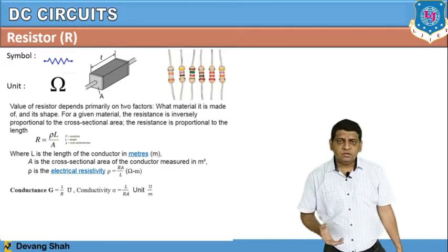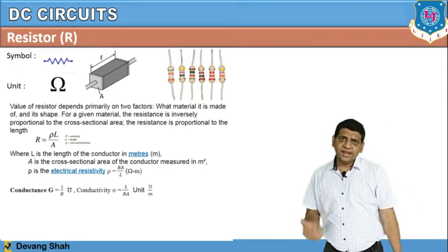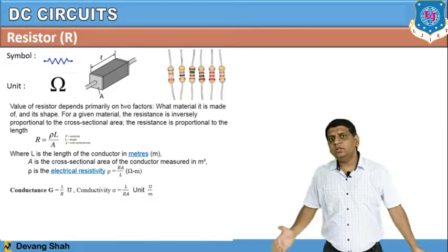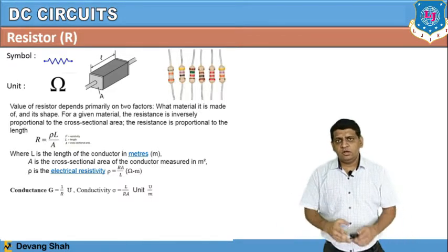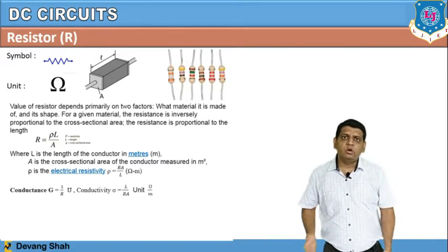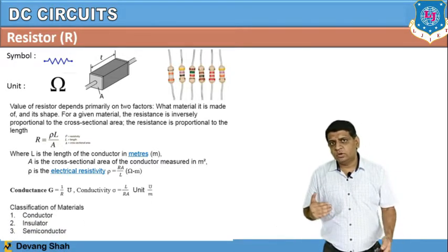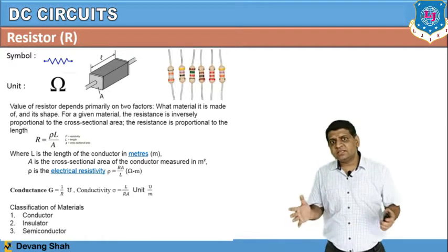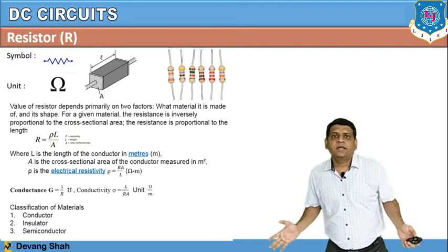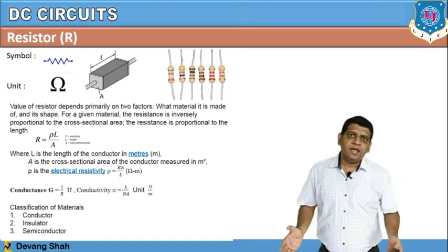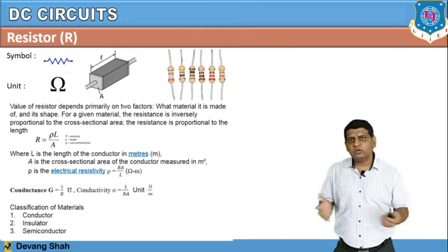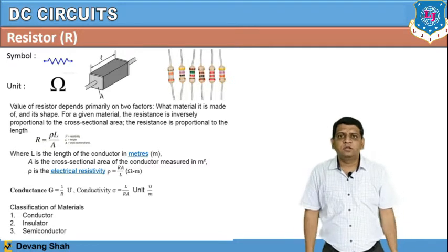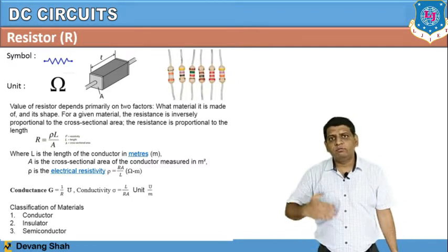Based on conductivity, all materials can be categorized into three forms: conductor, insulator, and semiconductor. Based on this conductivity, you can categorize materials and choose them based on their resistivity or conductivity for appropriate use in circuits.